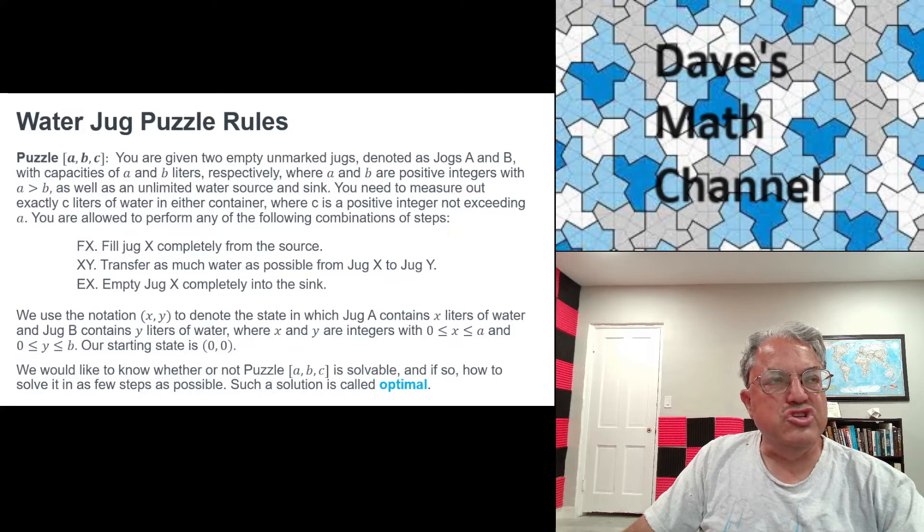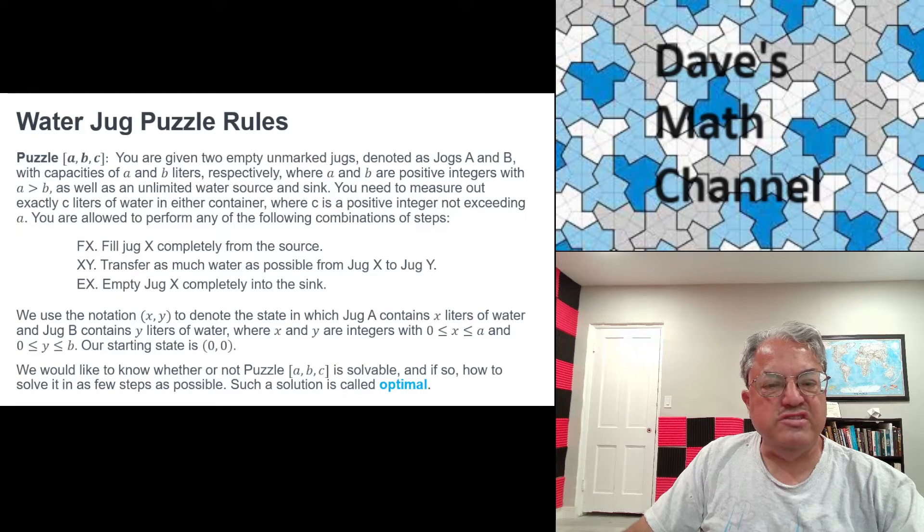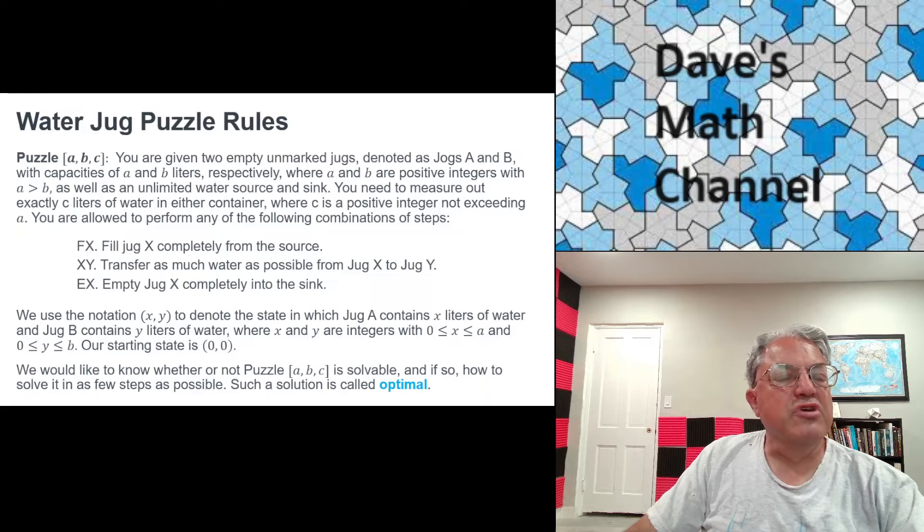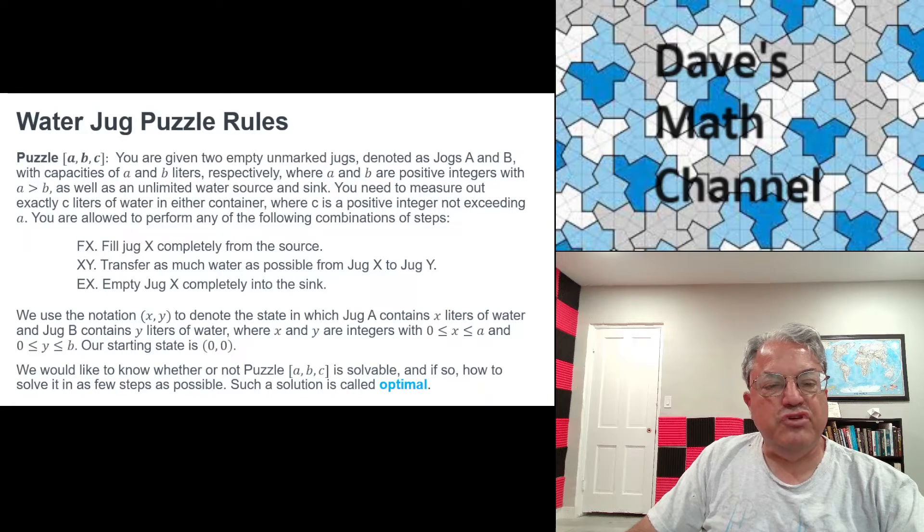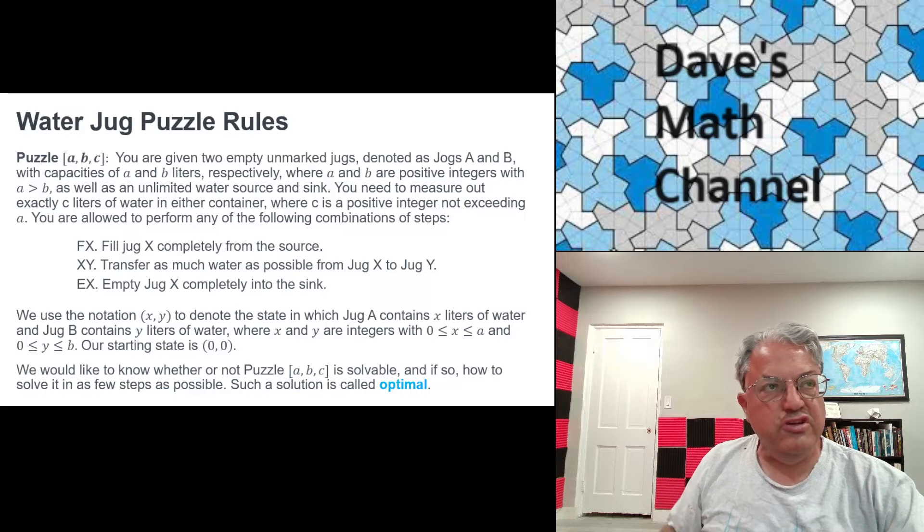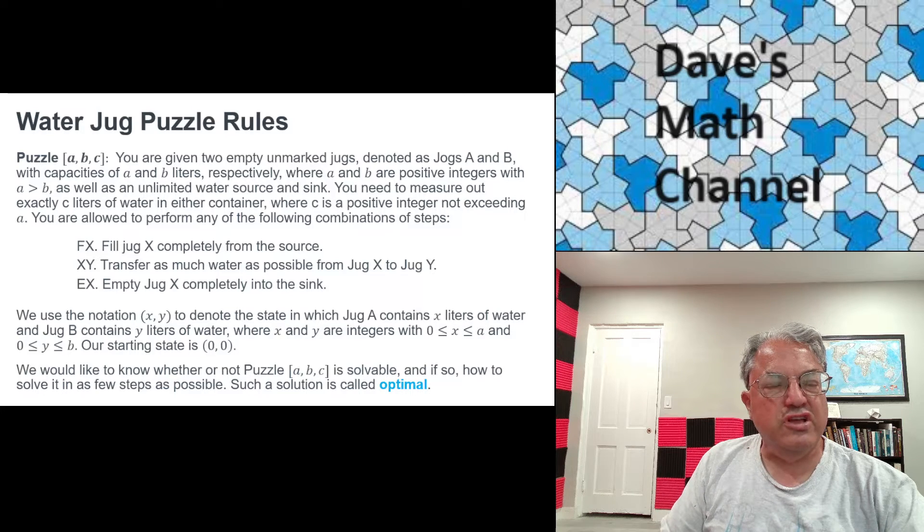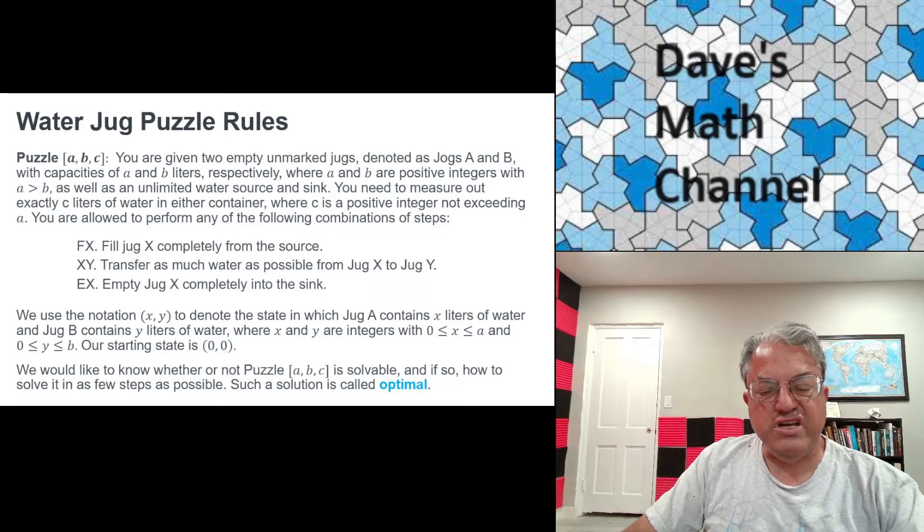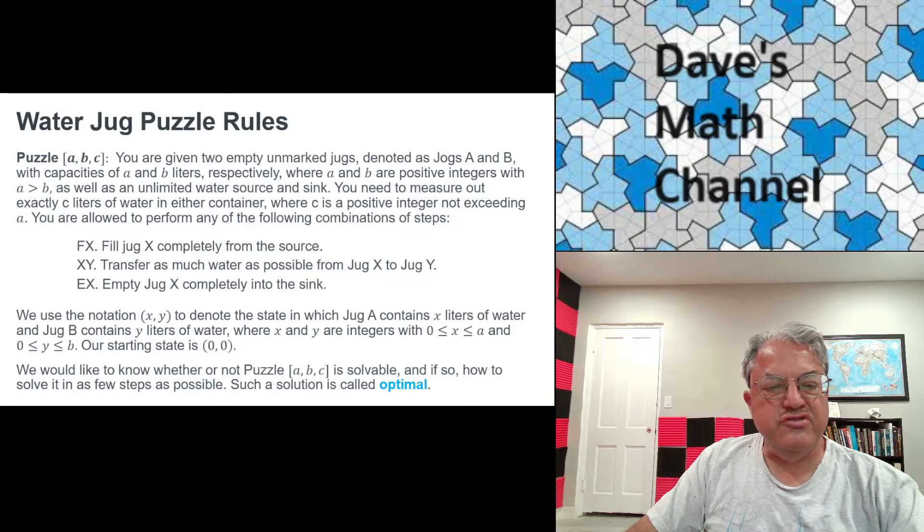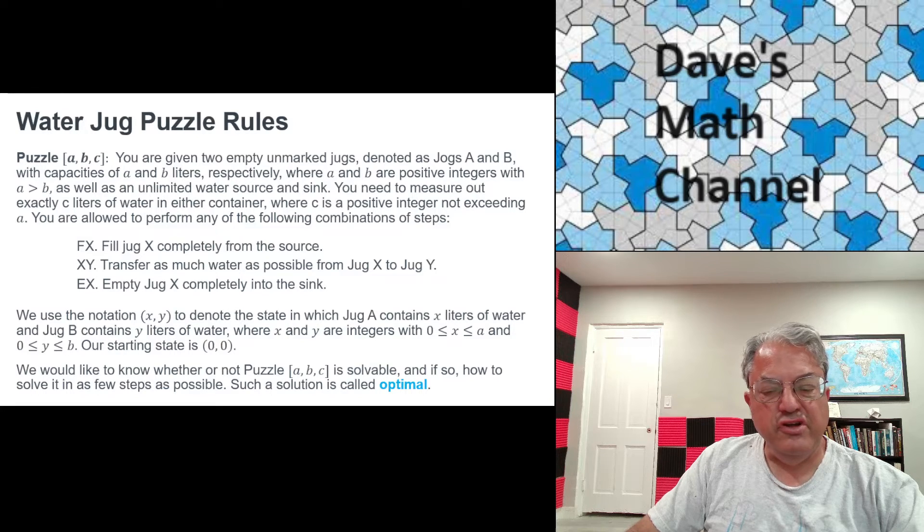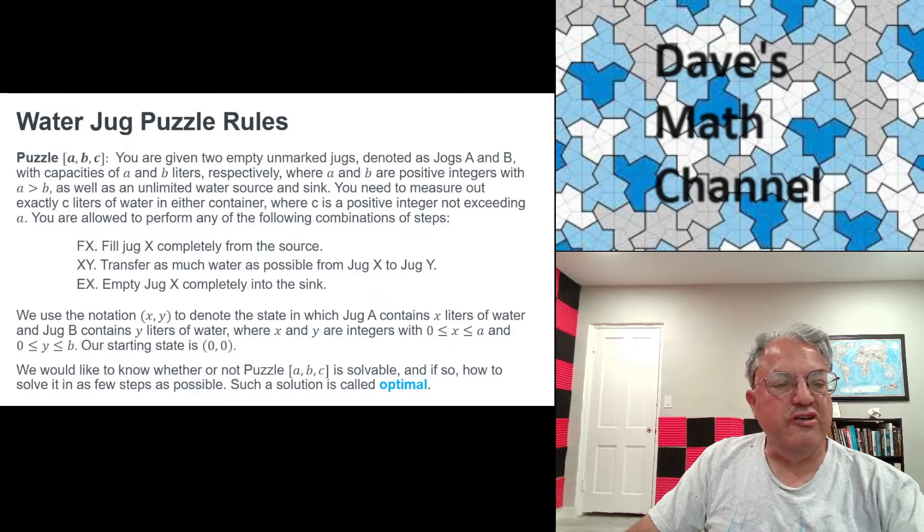And we want to measure out exactly small c liters. And we don't care which jug the c liters of water end up in. It can end up in either jug. And we don't care about how much water is left in the other jug. We're also given an infinite source of water, like a water tap that can supply as much water as we want to either jug. And we also have an infinite sink, so we can dump as much water as we want from either jug.